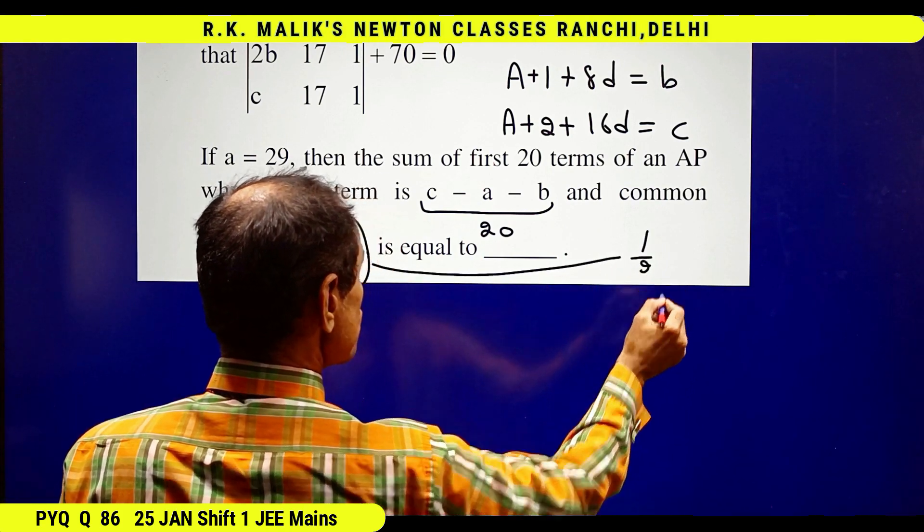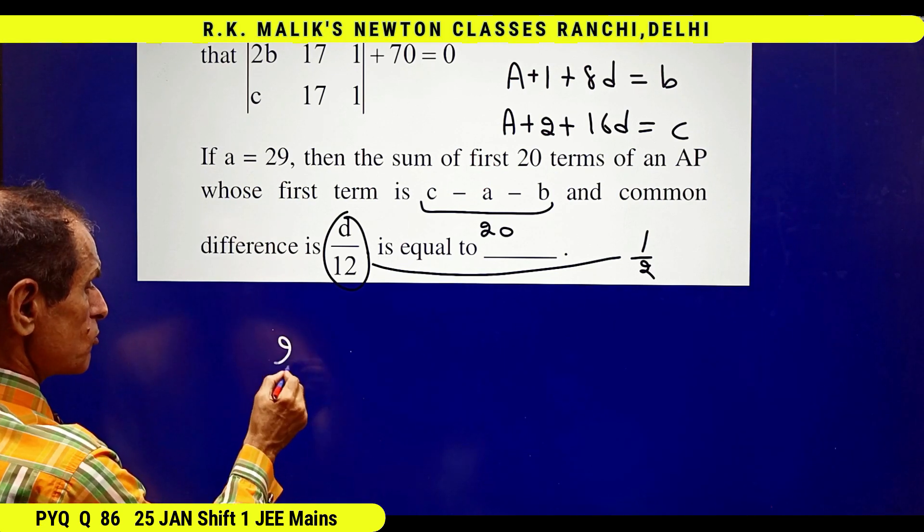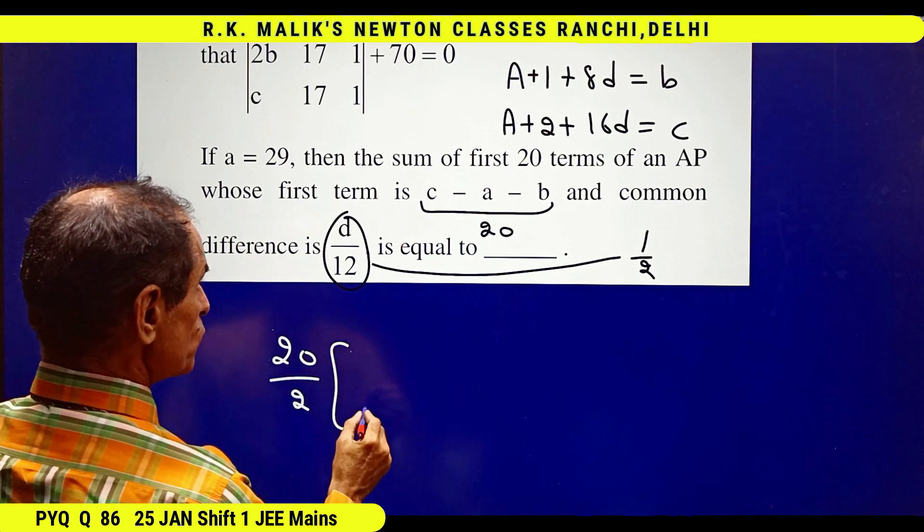Because the value of D we had found was 6, and this is 20 and this is 1 by 2, therefore the sum of first 20 terms will be 20 by 2 into 2 times 20 plus 19 times 1 by 2.